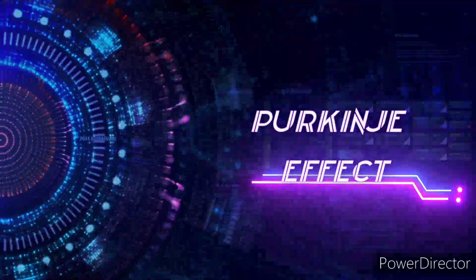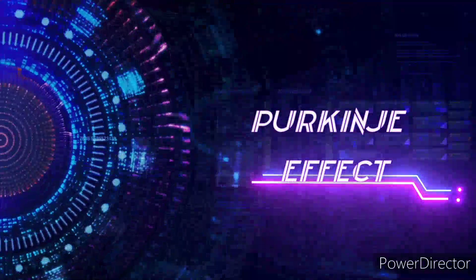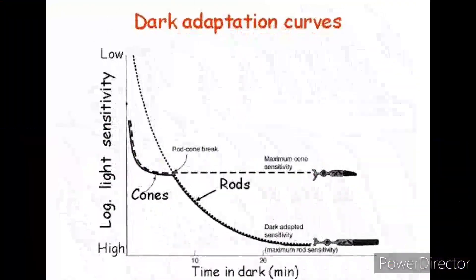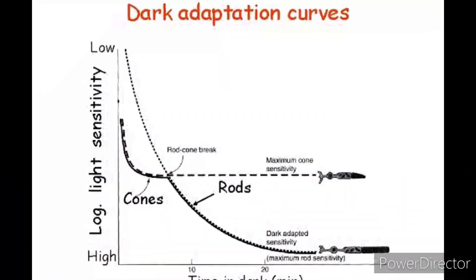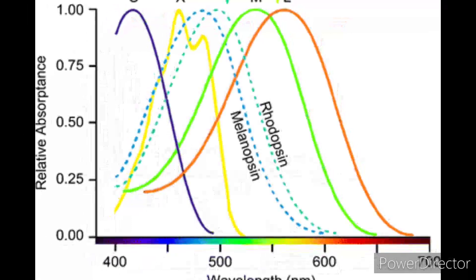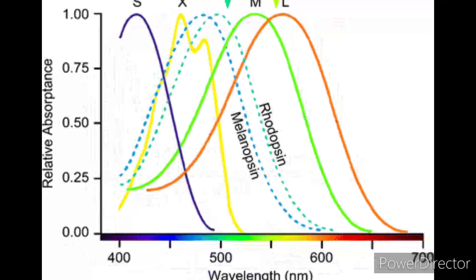The topic for today is about the Purkinje effect. What is the Purkinje effect? Sometimes called the Purkinje shift or dark adaptation, it is the tendency for the peak sensitivity of the human eye to shift towards the blue end of the color spectrum at low illumination levels.